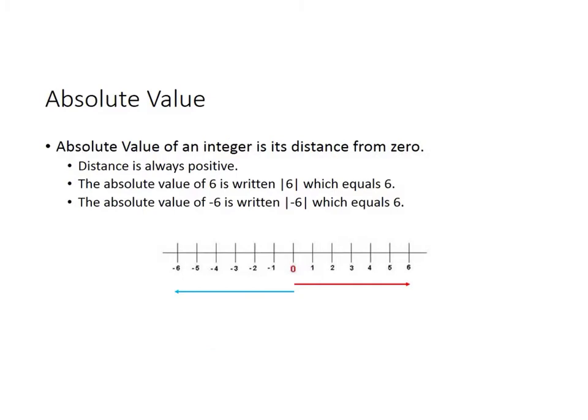Another vocabulary word that's important for you to know is absolute value. The absolute value of an integer is its distance away from zero. Distance is always going to be positive. For example, the absolute value of six is written with two bars around it — that shows absolute value — and six is six units away from zero. The absolute value of negative six is also six, because negative six is still six units away from zero. So the absolute value of six and the absolute value of negative six are the same number because they're both the same distance away from zero.